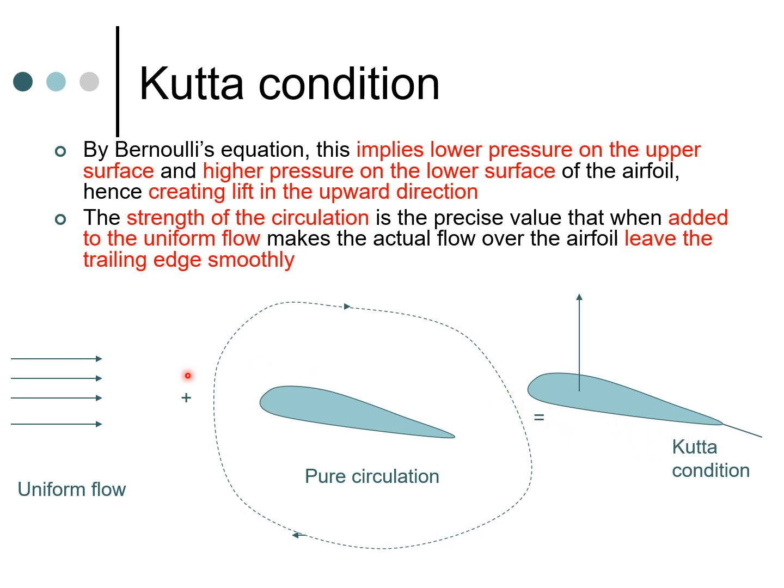So this is the typical result of this combination of uniform flow and pure circulation, and this is going to create a lift in the upward direction. So this is what we see in an airfoil section when it is placed in flow. Now how much is this circulation?